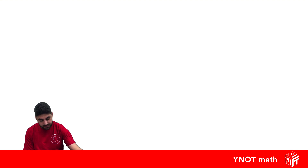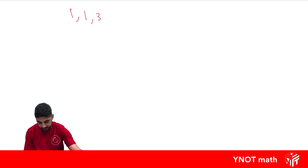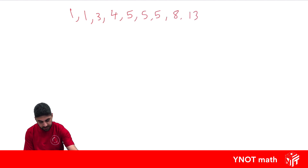Now let's look at that same data set, but this time we're just going to add on one extra number and see what happens. We add on 14, giving us: 1, 1, 3, 4, 5, 5, 5, 8, 13, 14.